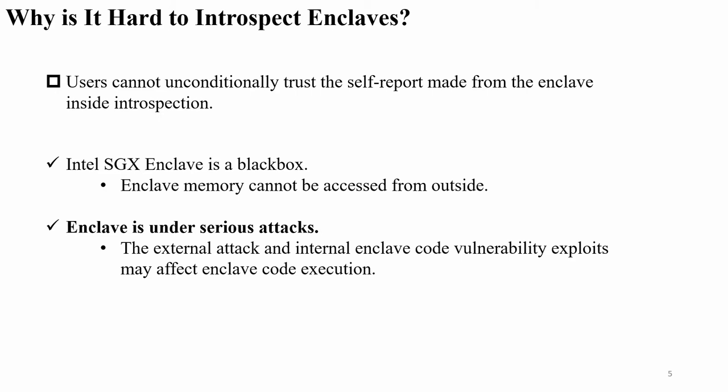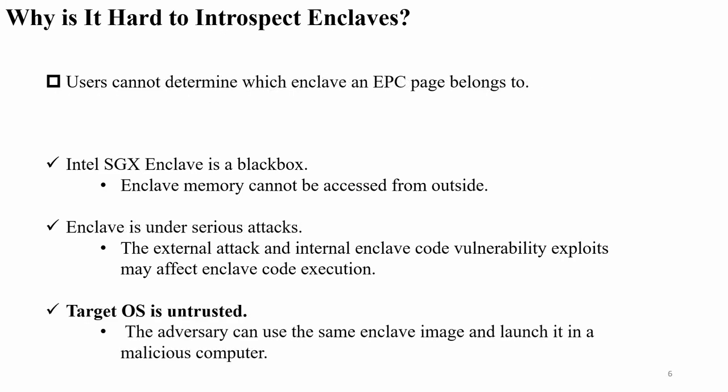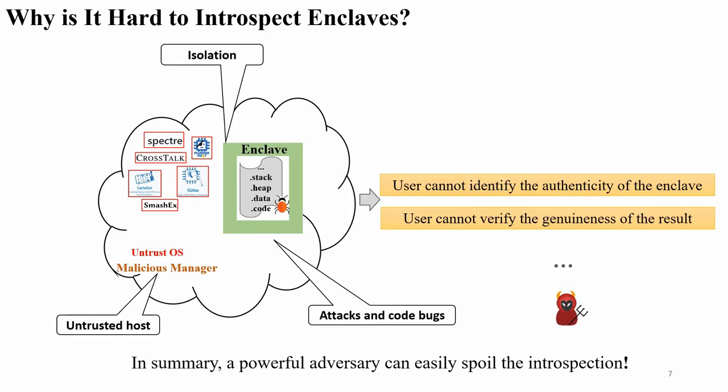External attacks, internal attacks, and enclave code vulnerabilities may affect enclave code execution. Finally, the user cannot determine which enclave EPC page belongs to which enclave. And because the target OS is in an untrusted state, the adversary can use the same enclave image and launch it on a malicious computer. Among untrusted host attacks and code bugs, the user cannot identify the authenticity of the enclave and cannot verify the correctness of the result. In summary, a powerful adversary can easily subvert the introspection.